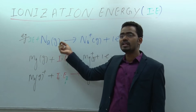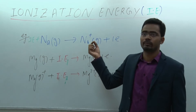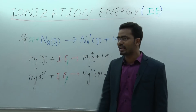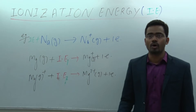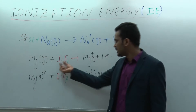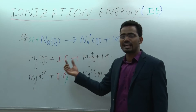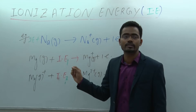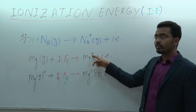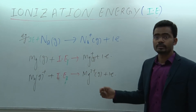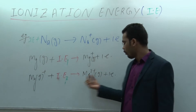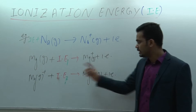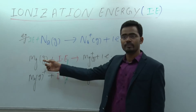Sodium has only one valence electron, so there is only one ionization energy — no first and second distinction. But magnesium has two valence electrons. When a single electron is lost, the energy required is called the first ionization energy. When Mg-plus releases one more electron to form Mg2-plus, that energy is called the second ionization energy, I2, for magnesium.